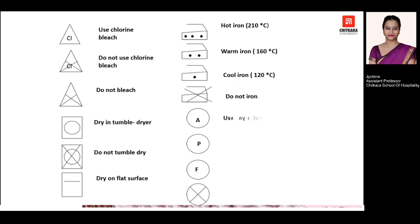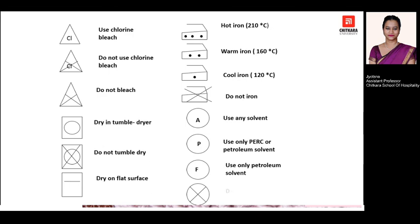For dry cleaning symbols, if your circle has the initial 'A', it means you can use any solvent for dry cleaning. If it's written 'P', you have to use a specific petroleum-based product or dry cleaning chemical — most commonly PERC (perchloroethylene), which is the preferred dry cleaning chemical. If your circle has the initial 'F', you can use any petroleum-solvent-based chemical. If it has a cross mark, it means the product does not require any dry cleaning process.